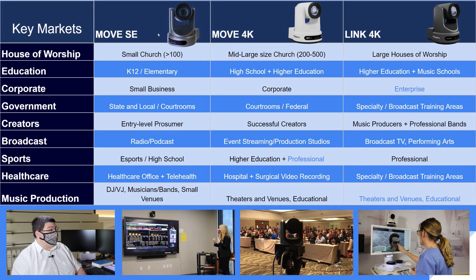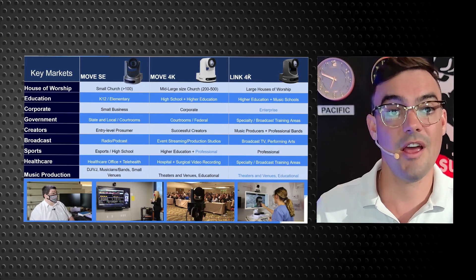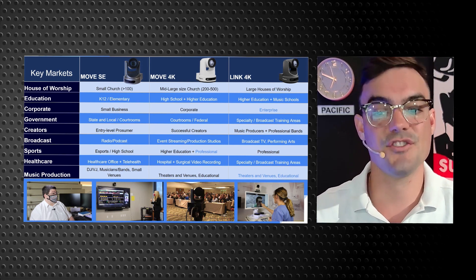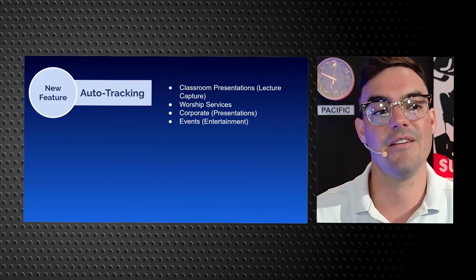We have three camera models: the Move SE is for price-sensitive markets such as smaller churches, K-12 schools, small businesses, and state and local government. The Move 4K is more future-proof — it still works in 1080p mode — and is suited for mid-to-large churches and higher education wanting a long-term investment backed by a five-year warranty. The Link 4K supports Dante and is used in enterprise, larger deployments, musical venues, and live streaming systems.